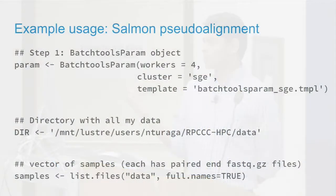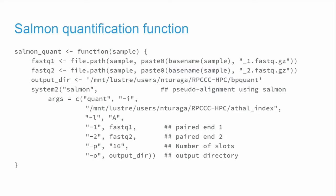Just to go over a quick example which is relevant to bioinformatics — instead of approximating pi — we want to do a pseudo alignment using Salmon. I have some FASTQ files, paired FASTQ files, about 16 samples. I initiate a BatchToolsParam on a SunGrid engine cluster again, and this time I pass in the template argument and give it a template specific to my institution. I give it a list of samples, and then as a function I pass BPLApply a function called salmon_quant. All it does is a system command which passes in Salmon quantification for both the FASTQ files.